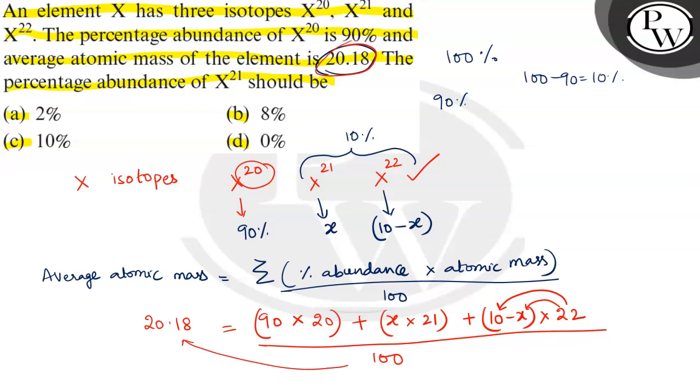And which option is correct? Option is 2%. So what about X^22? X^22 will be 10 minus X, that is 10 minus 2, 8%.